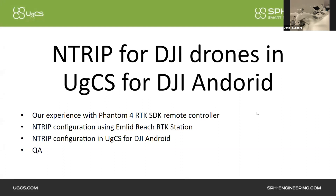First, I will shortly share our experience with Phantom 4 RTK drone and SDK remote controller. Then explain the configuration of network RTK with Emlid Reach RTK station and necessary network RTK configuration in UGCS for DJI Android application. At the end, time for questions and answers. Maybe I will show some basics on UGCS functionality, simple waypoint route creation, and explain actions on waypoints.